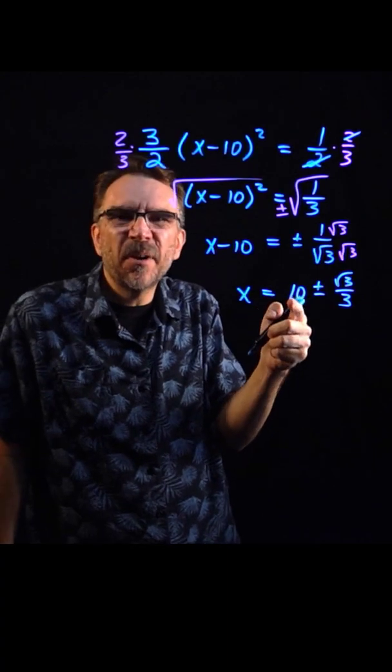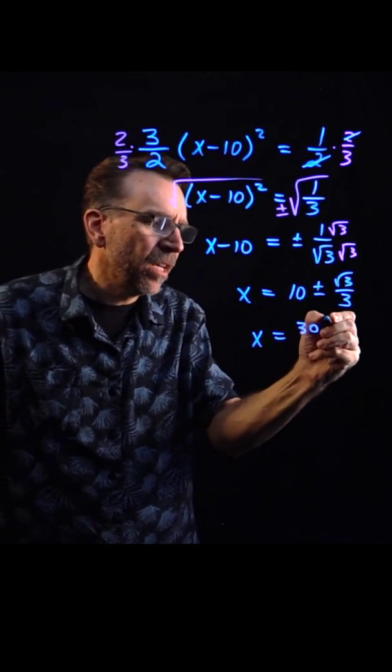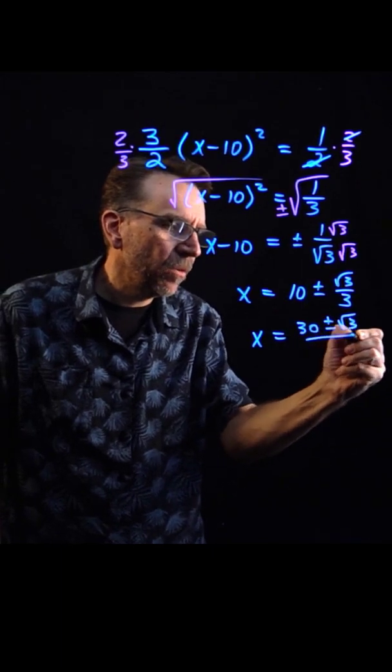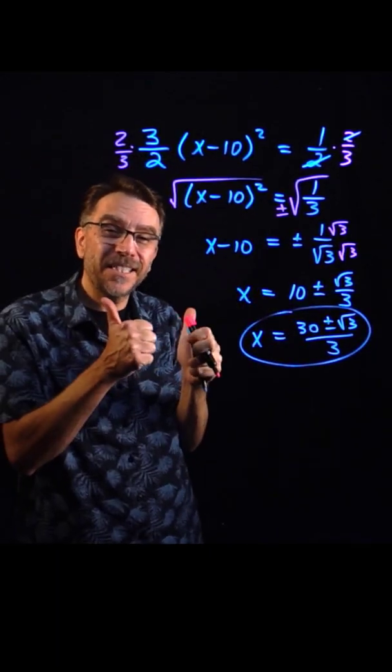And now for the last step you might want to get a common denominator. And so in that case we have thirty plus or minus square root of three over three. So there's the two solutions to the original quadratic equation in a short.